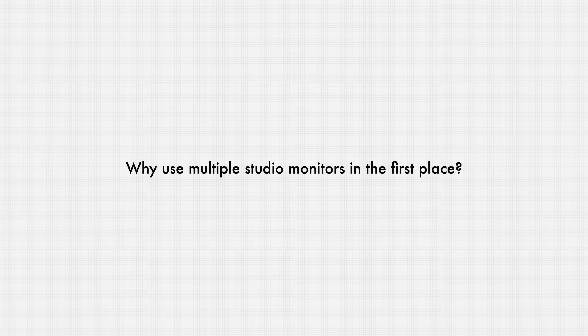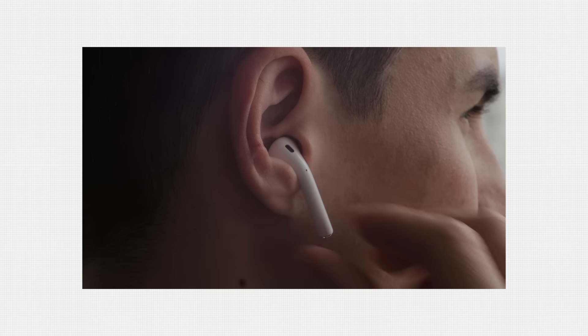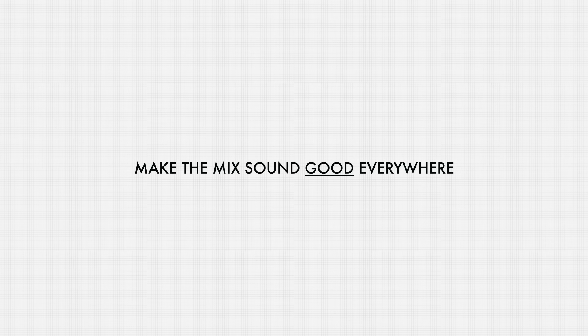Before getting into the practical setup and calibration tips, let's quickly go over why you'd want to use multiple pairs of studio monitors in the first place. The same mix can sound radically different depending on the playback system you're using. This is one of the biggest obstacles mix engineers face — how do you make a song sound good for listeners when you have no control over what system the listener will be listening on? There isn't an answer that provides a complete solution. But when you change the goal from making the mix sound the same everywhere to making the mix sound good everywhere, the goal becomes much more achievable.